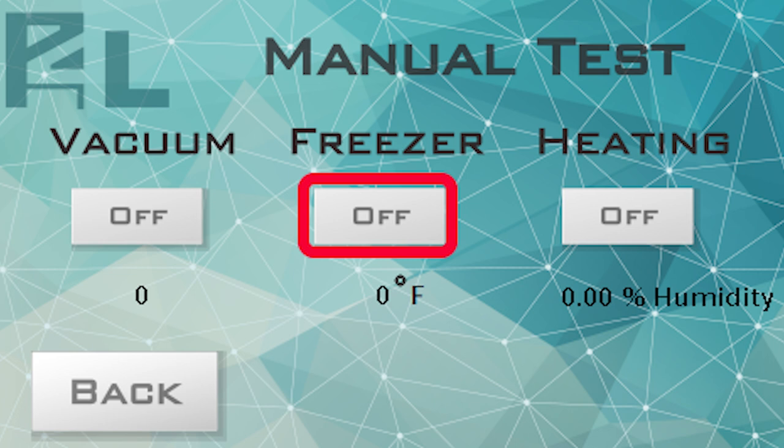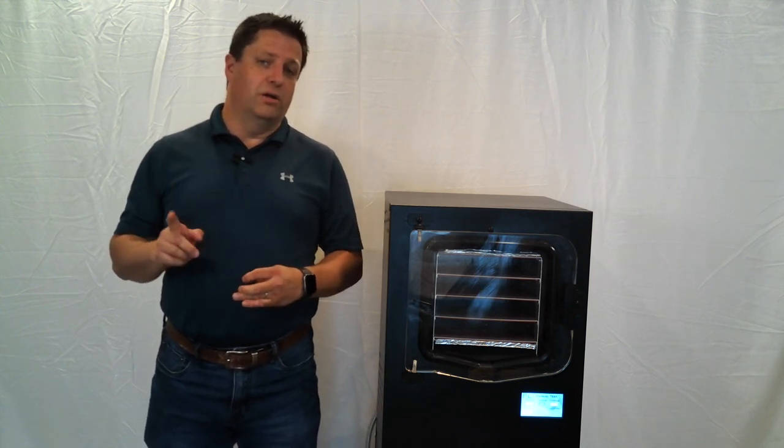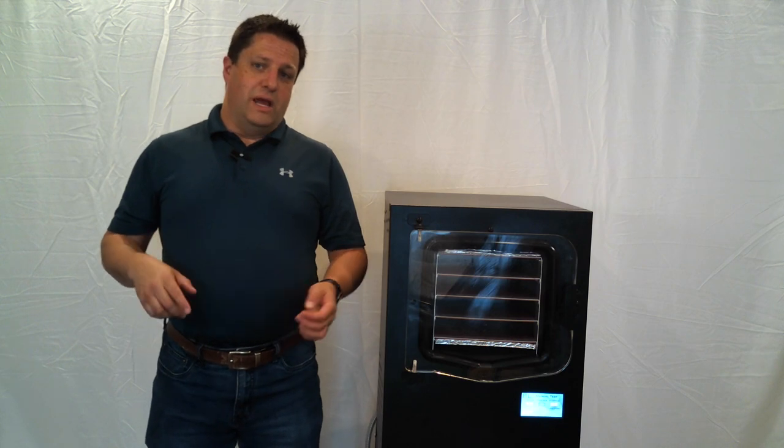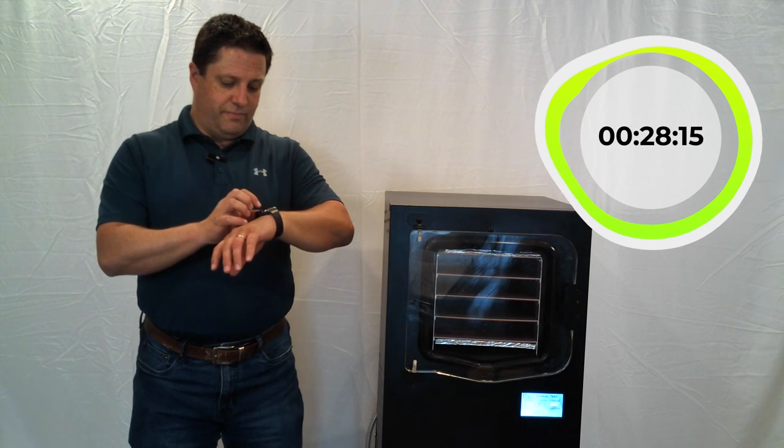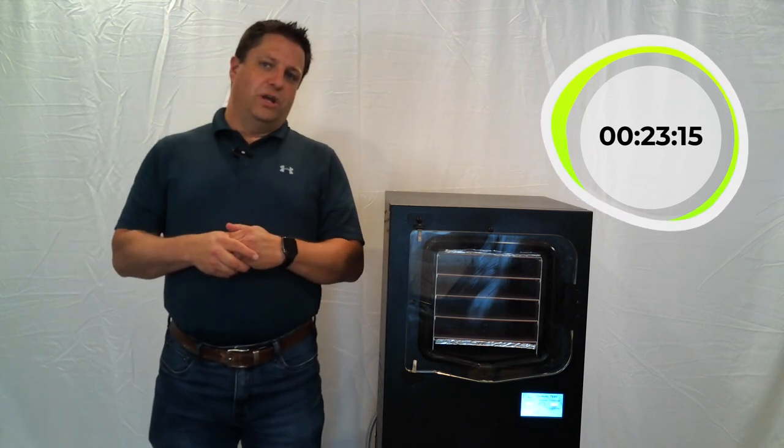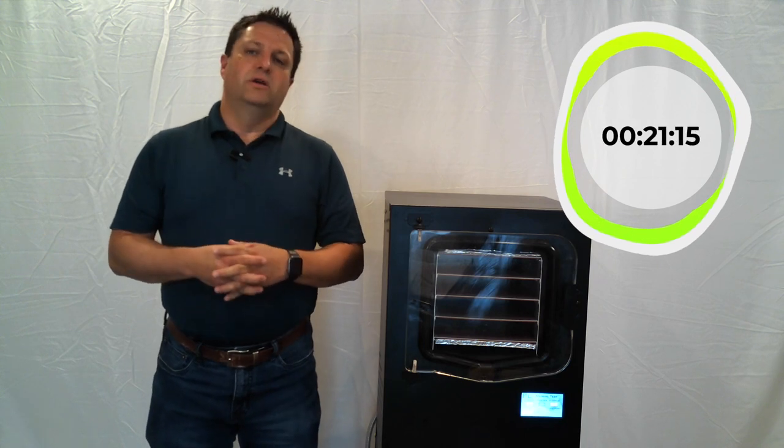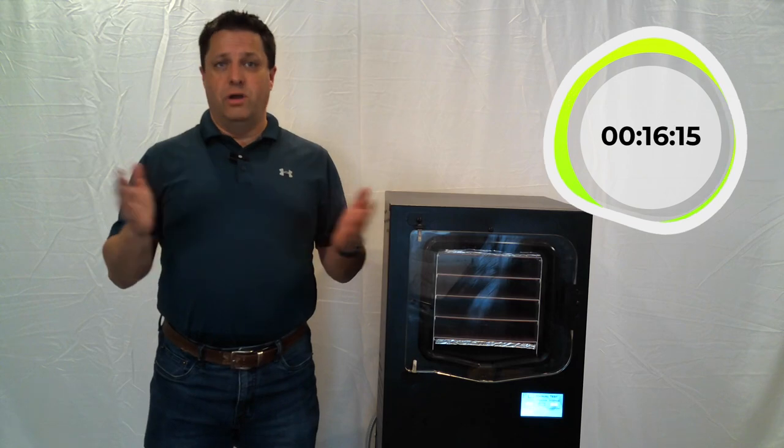First, we will turn on the freezer by pressing the freezer button. Notice the temperature of the chamber underneath the freezer button. It will likely be close to your ambient temperature if this is the first time being turned on. Now, we are going to set a timer for 30 minutes. This will allow all the moisture inside the chamber to freeze. You don't need to sit by the cube during this time. I will come back to you in 30 minutes.